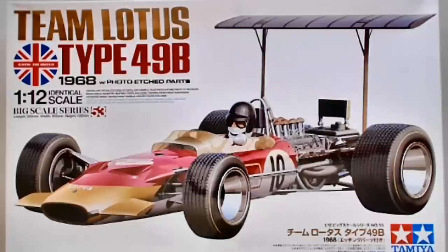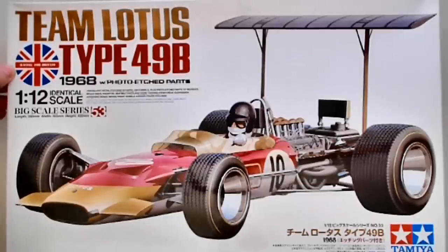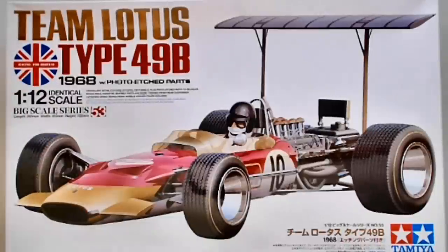This is Team Lotus Type 49B 1968 with photo etched parts. This is a 1:12 scale kit, as you can see. Big scale series. And they've got their Racing for Britain, which I believe was their thing for the team, Team Lotus.